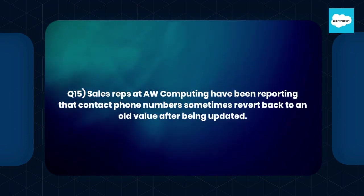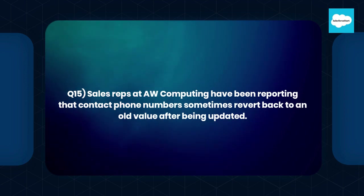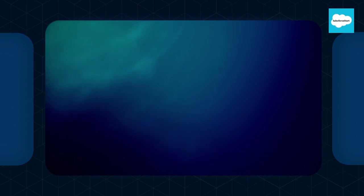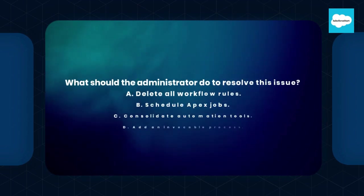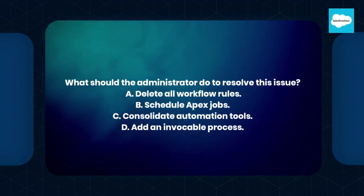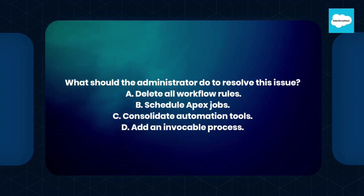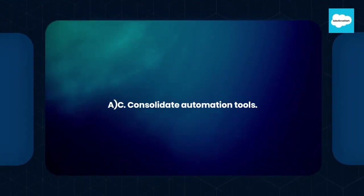Question number 15. Sales reps at AuComputing have been reporting that contact phone numbers sometimes revert back to an old value after being updated. What should the administrator do to resolve this issue? A. Delete all workflow rules. B. Schedule Apex jobs. C. Consolidate automation tools. D. Add an invocable process. Answer: C. Consolidate automation tools.